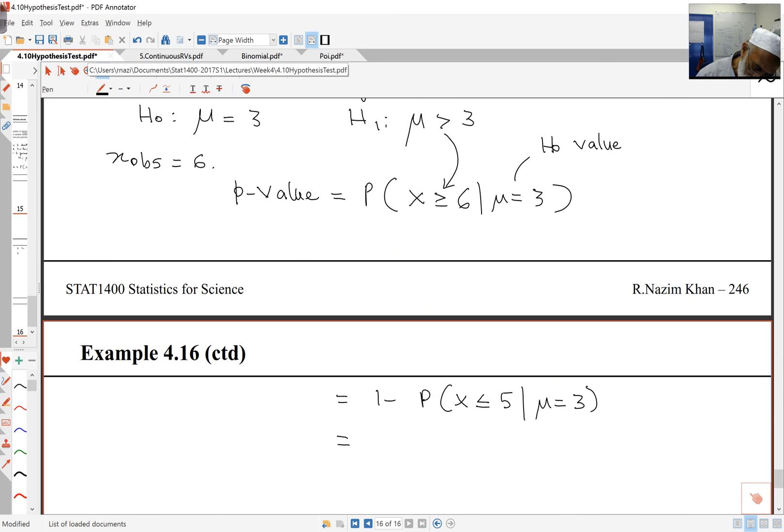That's one minus 0.9161, which equals 0.0839.